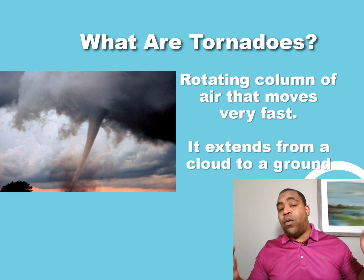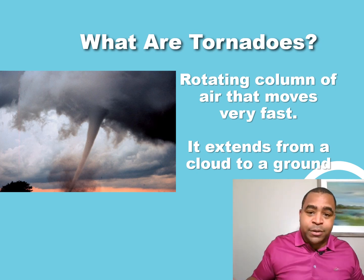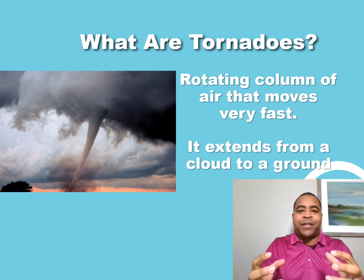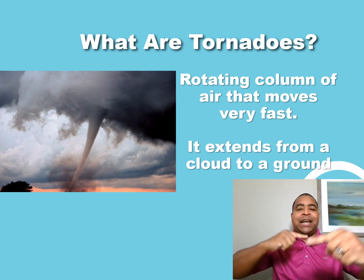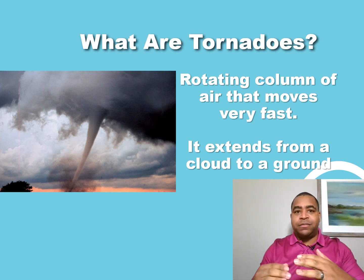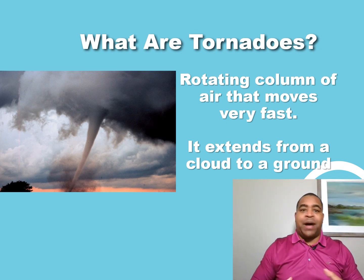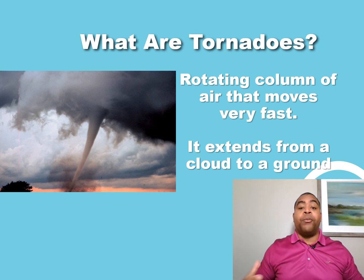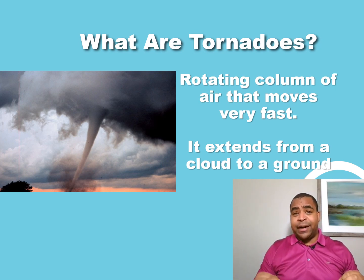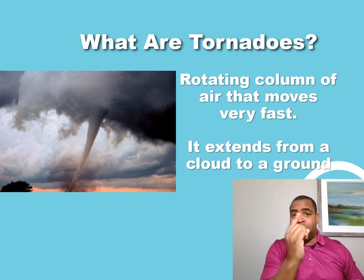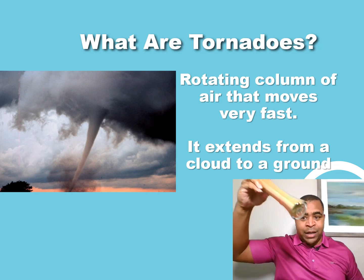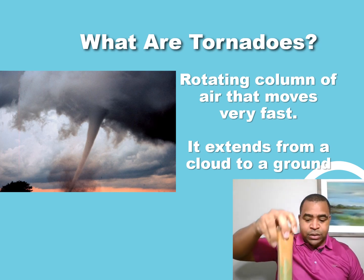So first things first, what exactly are tornadoes? Well, tornadoes are nothing more than a very fast-moving, rotating column of air that moves very, very fast — I'm talking a hundred miles an hour or more. Now, one of the things that most people think of when they think of tornadoes are the little funnel clouds that kind of come down out of the cloud and then touch the ground.